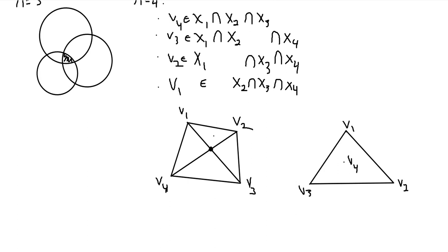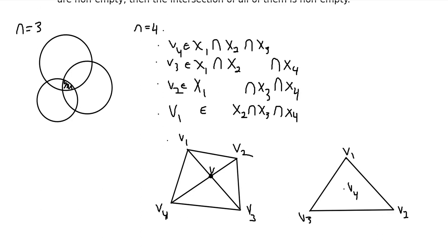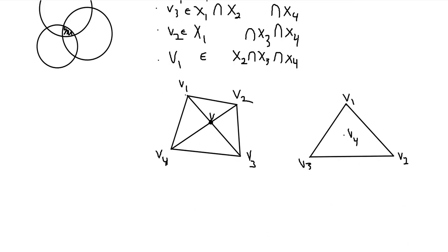And I claim that this point, which I'll just call V, is in each and every set. Why is that? Well, we can see that the points V1 and V3 sort of share a set, and that set is X2 intersect X4.